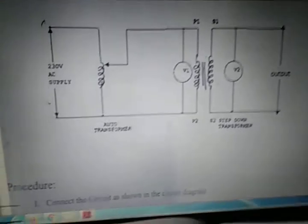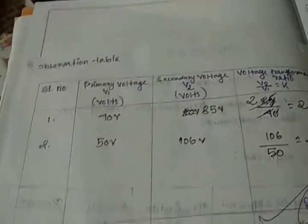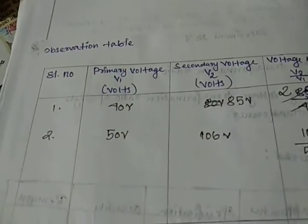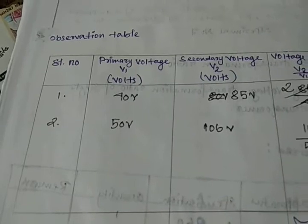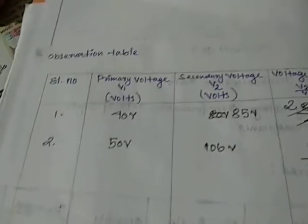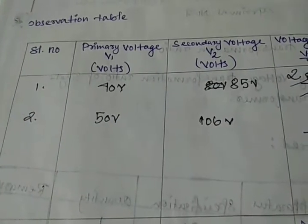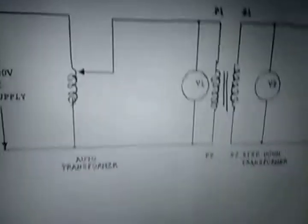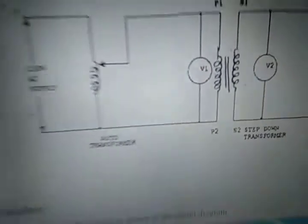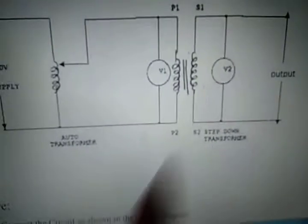This is our observation table. We do not need to take many observations—only two sets. For the primary side voltage, we take the measurement from this voltmeter, and from this voltmeter we can take the measurement of the secondary side voltage.